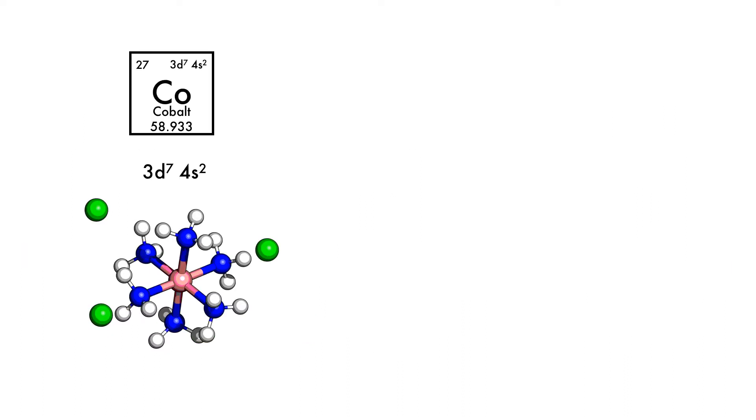Let's take a closer look at this with this hexamine-cobalt-3-chloride complex. As the complex is forming, the cobalt atom undergoes a change. Before losing electrons to form the ion, the electrons in the 4s orbital shift to the 3d orbital, giving us a 3d9 configuration.